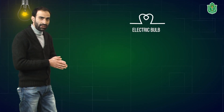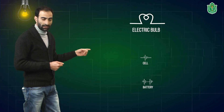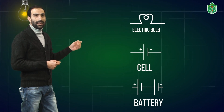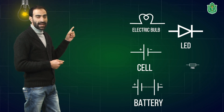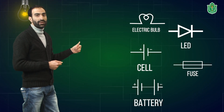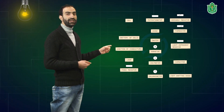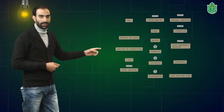For example, this is the symbol that is used for an electric bulb. This is the symbol that represents a cell. This is the symbol used for representing an LED. And this is the symbol for representing a fuse. Likewise, there are various other symbols that are used for representing the various components of electric circuits in circuit diagrams.